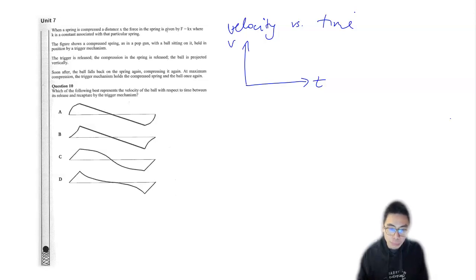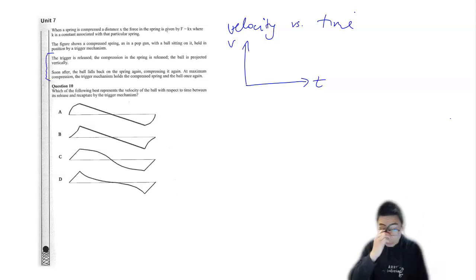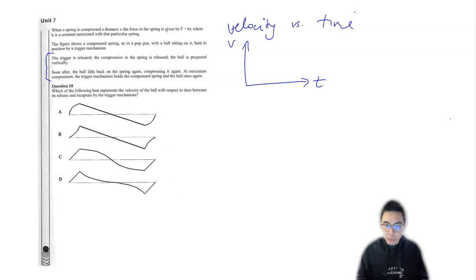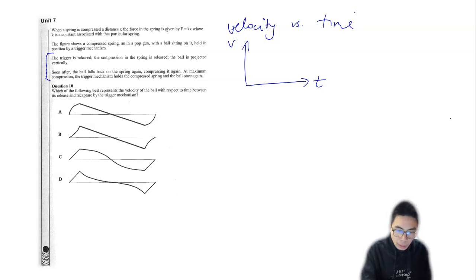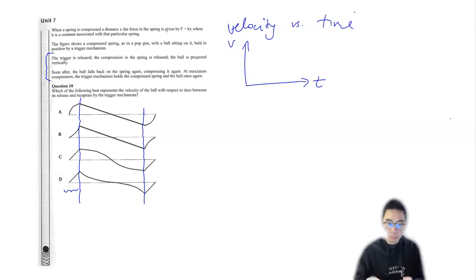Soon after, the ball falls back on the spring again, compressing it. At maximum compression, the trigger mechanism holds the compressed spring and the ball once again. Taking note of those two paragraphs: the beginning of this scenario is when the trigger is released. The ball is then projected, and you'll notice that in all of the options there are three distinct regions.